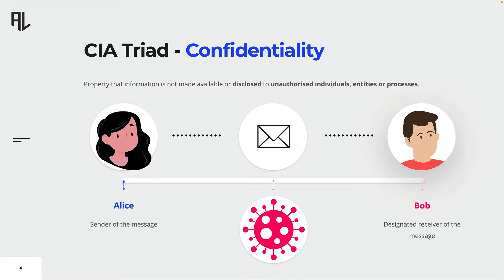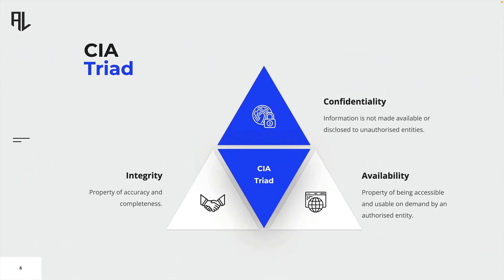Now imagine a third person somehow gaining access to the message after it has been sent. If the attacker manages to do so, he is able to read the content of this message, and therefore the message is no longer confidential. This is what we call a violation of the confidentiality security objective and can have serious consequences depending on the nature and the content of this message. So information security is about ensuring that information is not made available or disclosed to unauthorized entities.